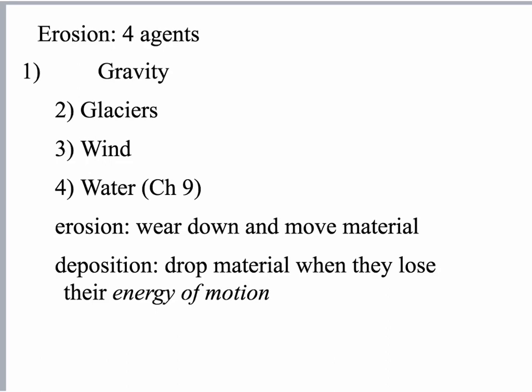Starting erosion: there are four agents of erosion. They are the two G's and the two W's — gravity, glaciers, wind, and water. In this chapter, we are going to be talking about gravity, glaciers, and wind. Water is so huge it gets its own chapter, so we'll get to that in chapter 9.